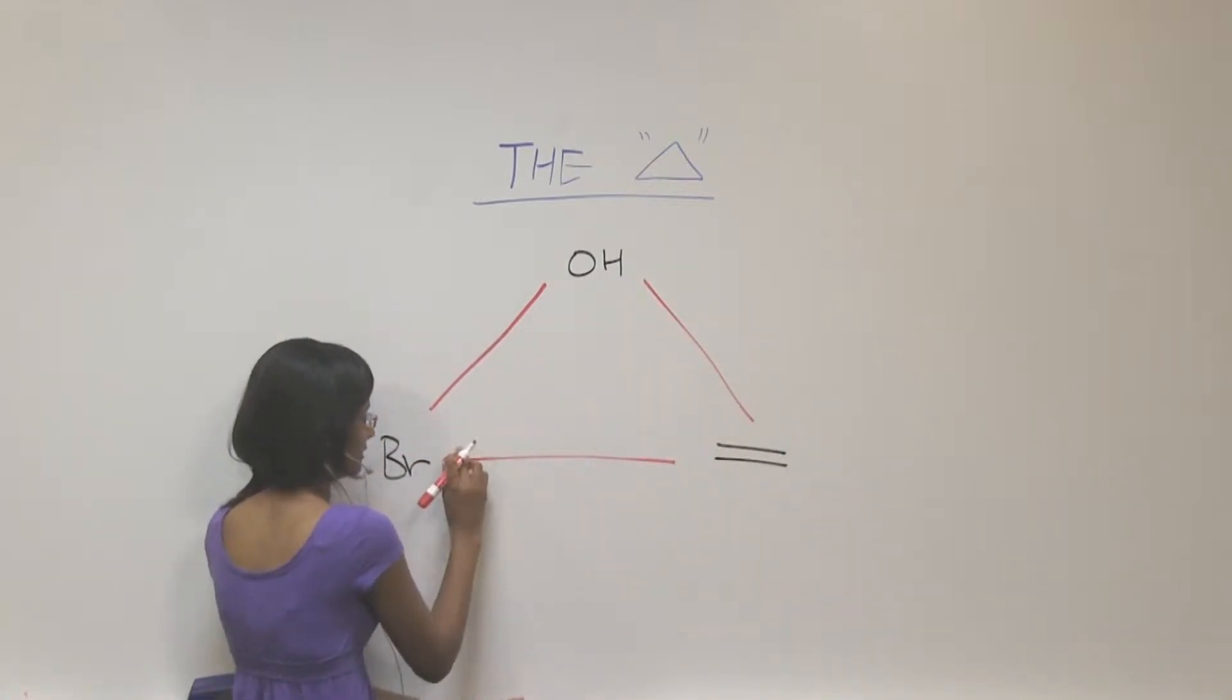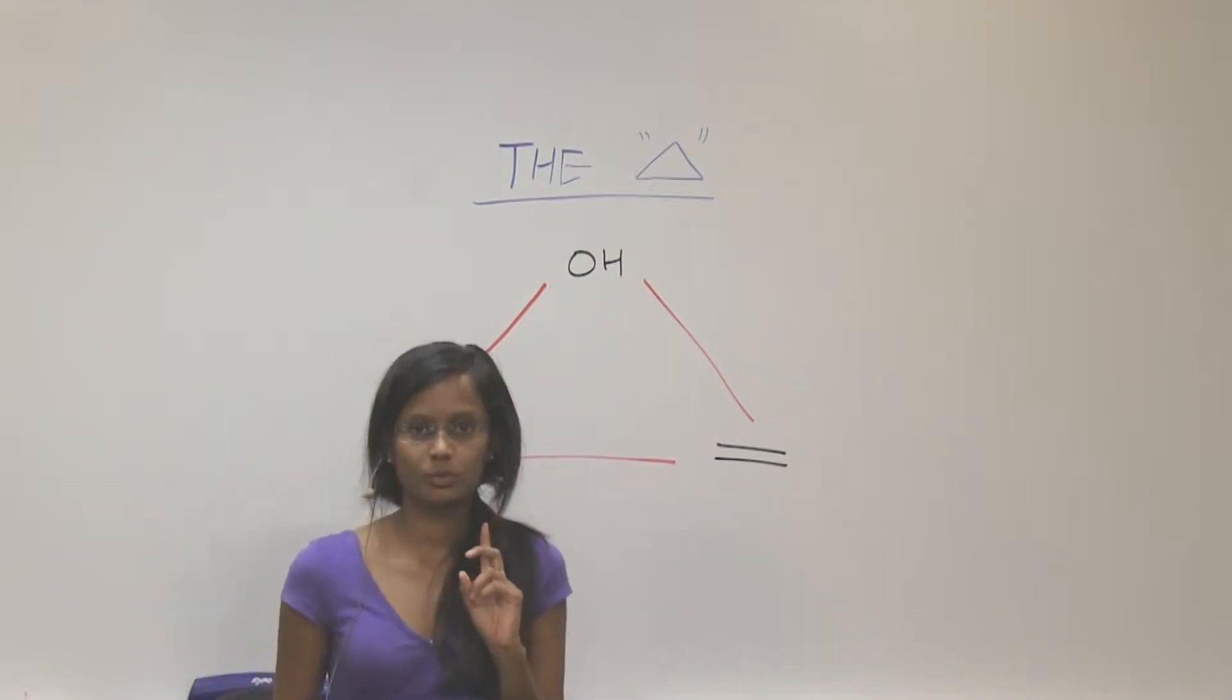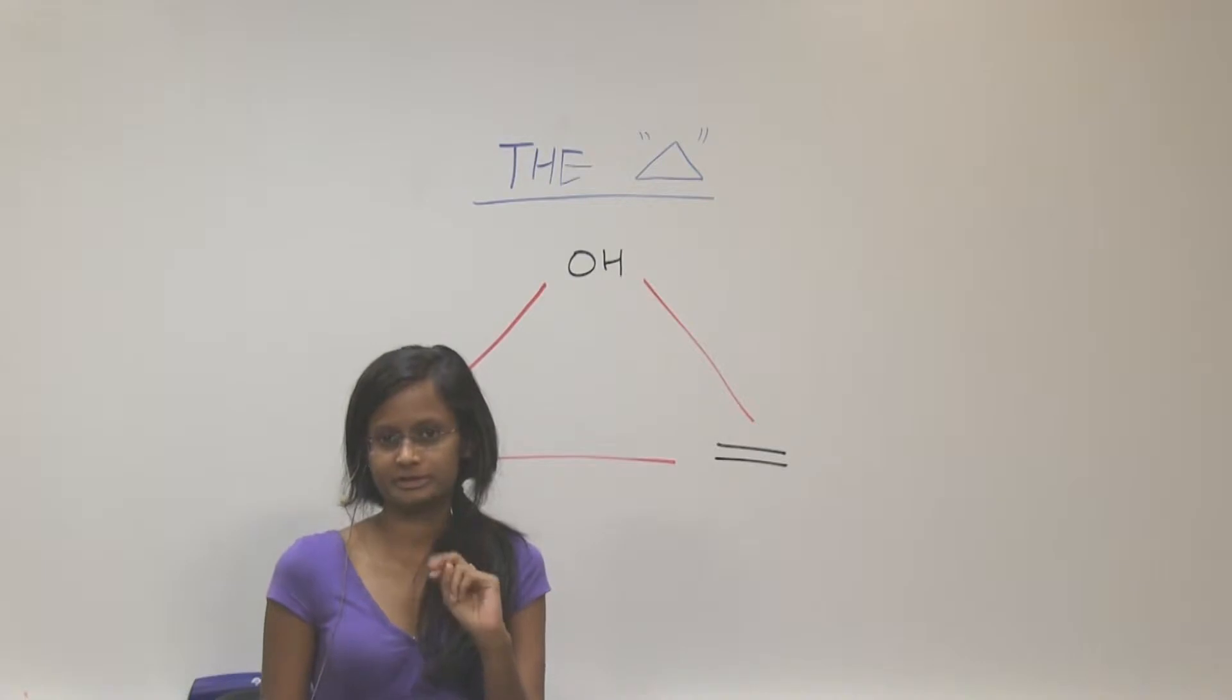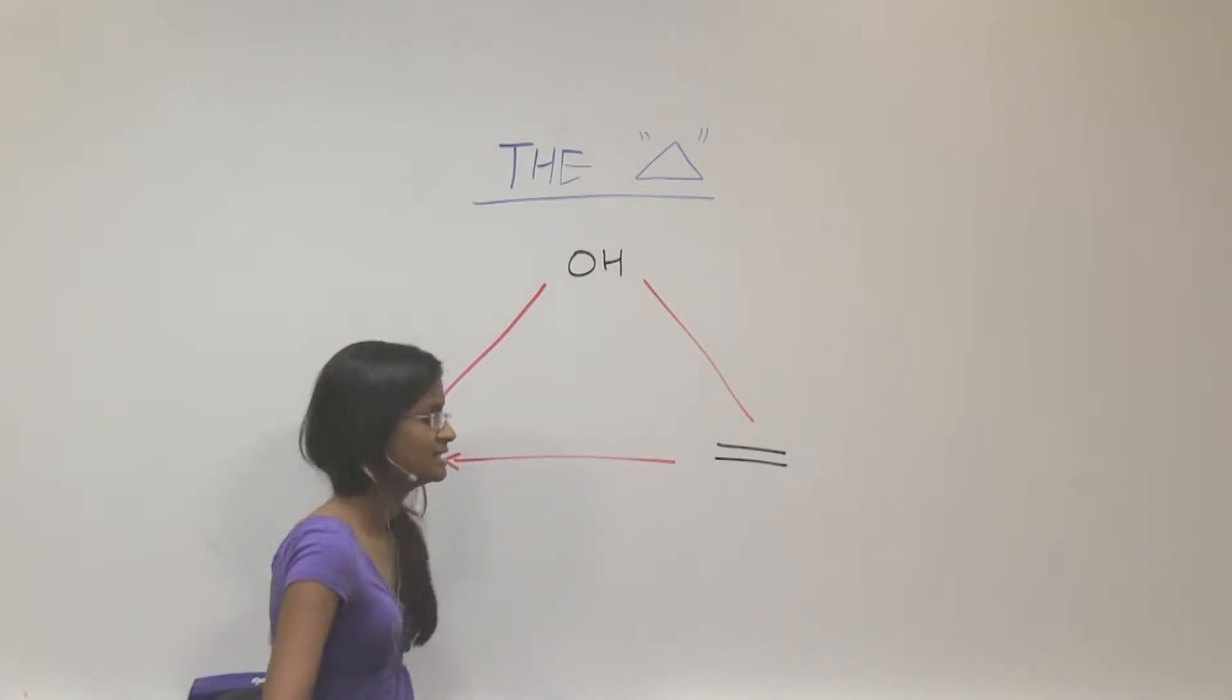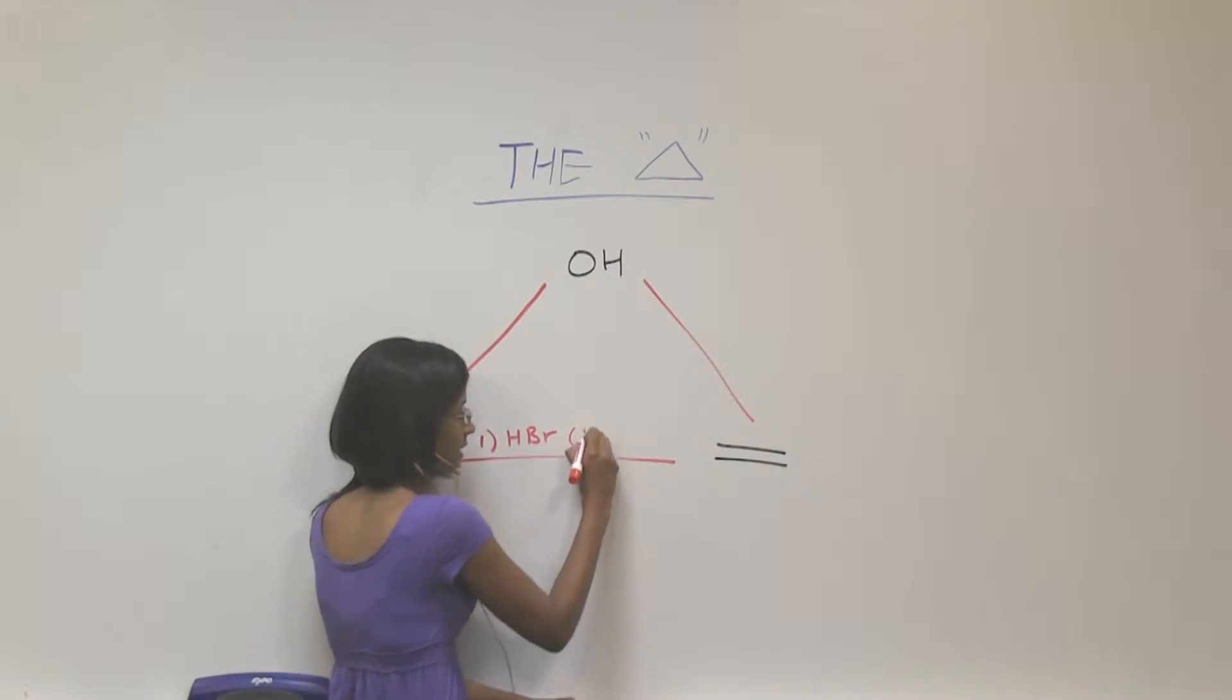Alkene to bromine, you have one or two different reagents, depending upon where you want your bromine to be added. So the first one that you have is HBr, and HBr will add a bromine to the Markovnikov side. So this is your first way of making it.